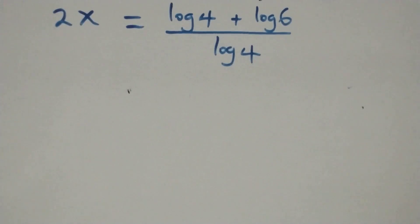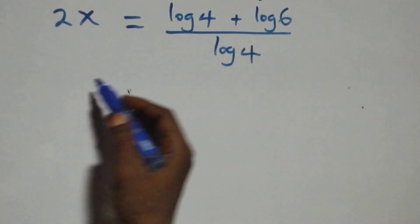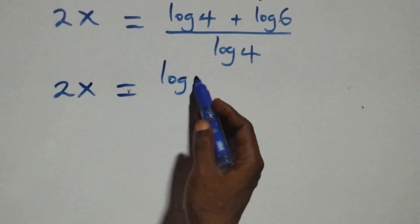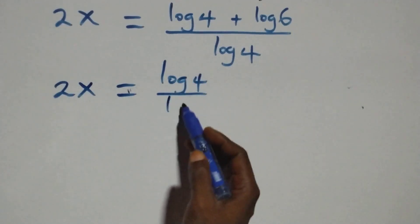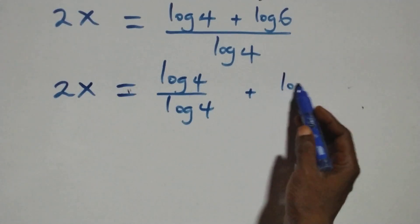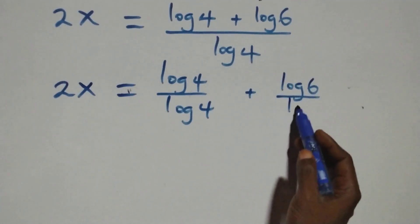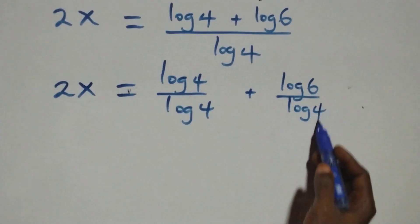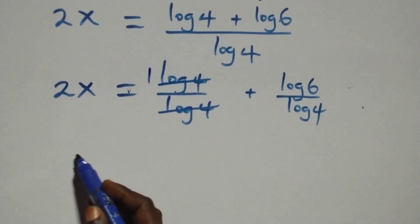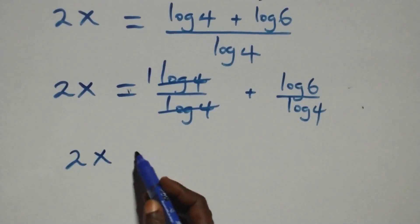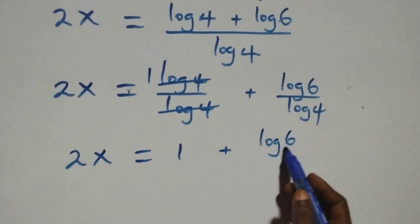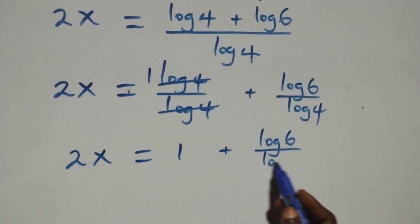Here log 4 cancels with log 4, leaving 1, and we have 2x equals 1 plus log 6 over log 4.